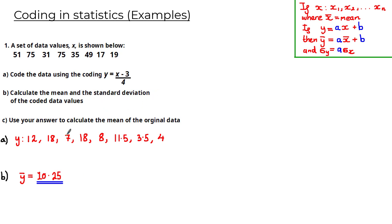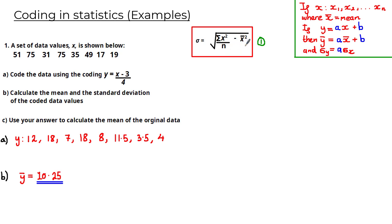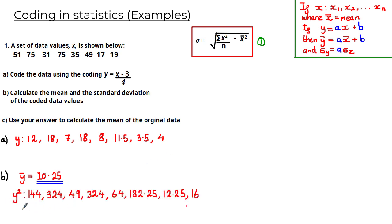We can calculate the mean of this data set by adding all the values and dividing by the number of values, giving ȳ = 10.25. To calculate the standard deviation, we'll use the exam formula: σ = √(Σx² / n − x̄²). Let's work out the y² terms by squaring each value. We get 144 (square of 12), 324 (square of 18), 49 (square of 7), and so on.